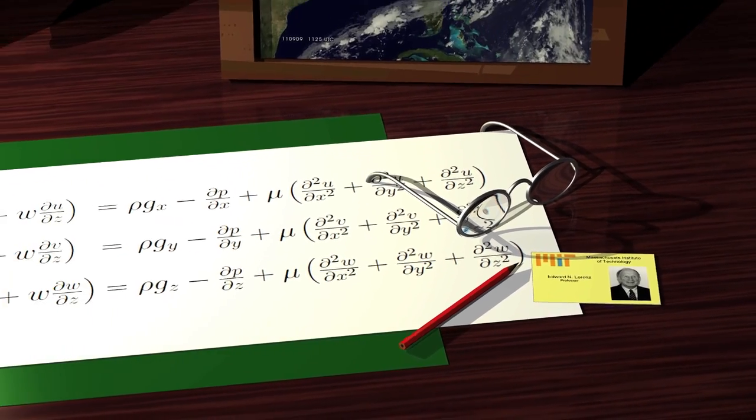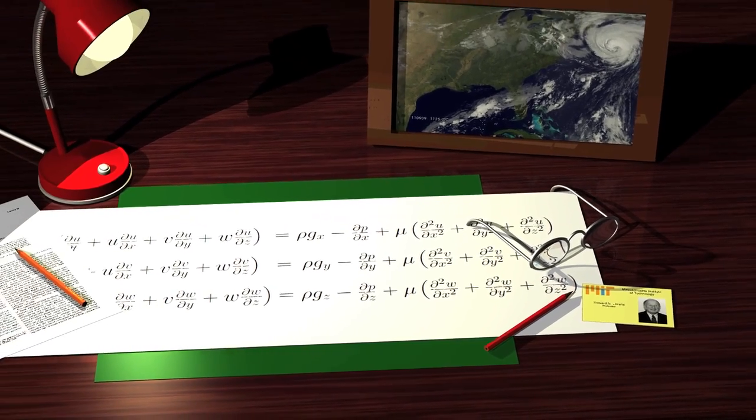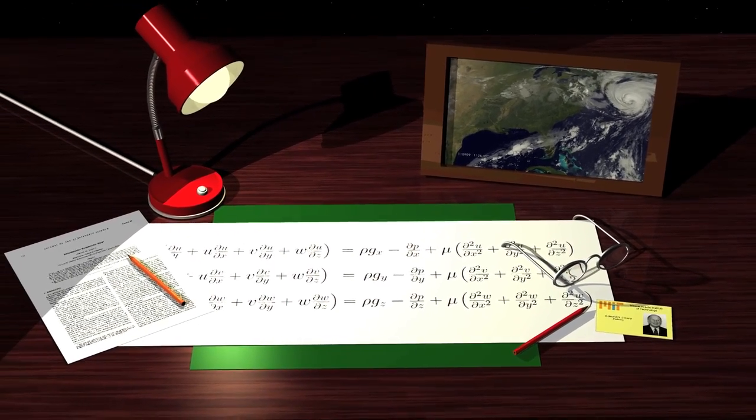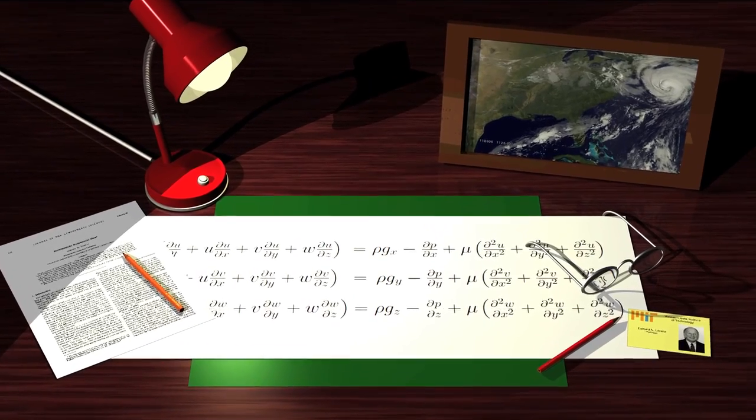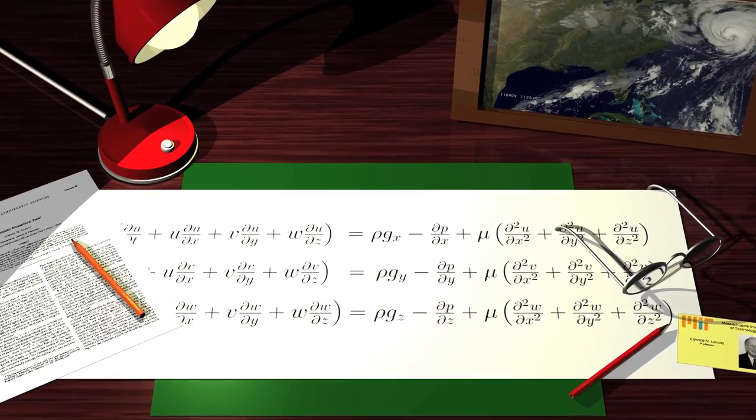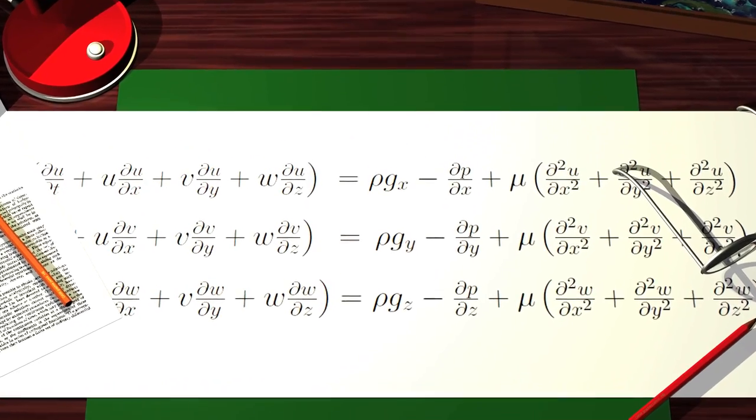In 1963, Edward Lorenz simplified, then simplified, and simplified the problem again. He simplified it to such a degree that there is no guarantee that his equation has anything to do with reality.